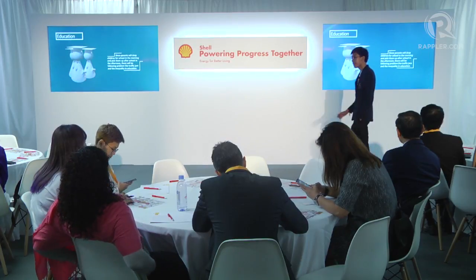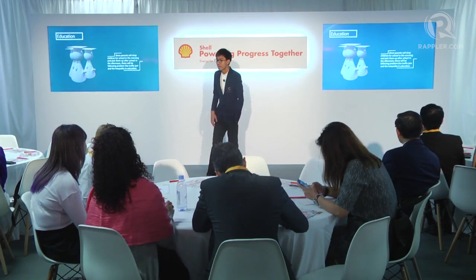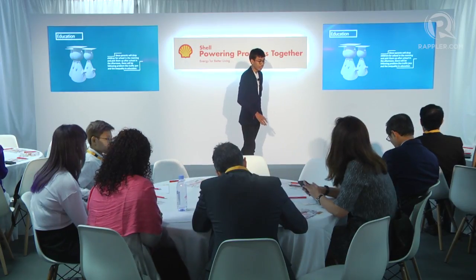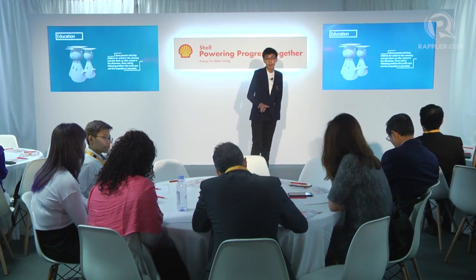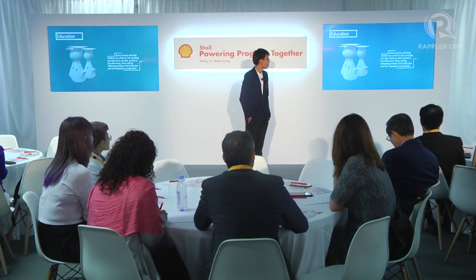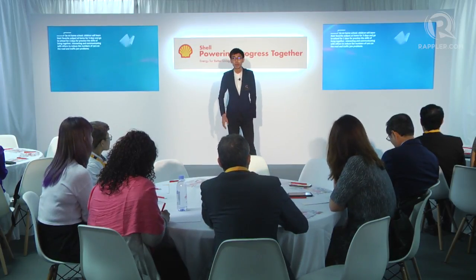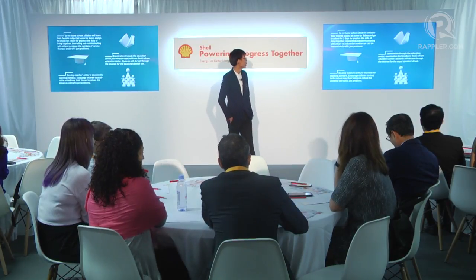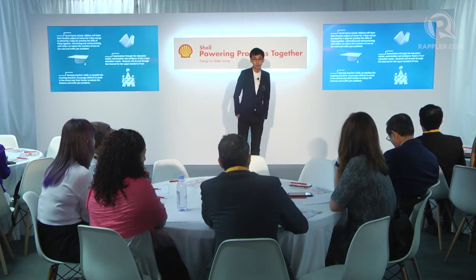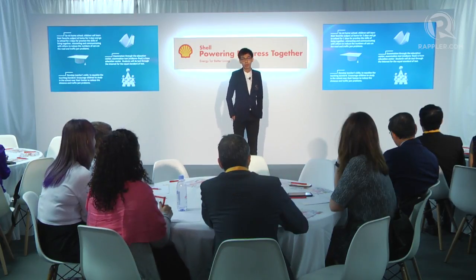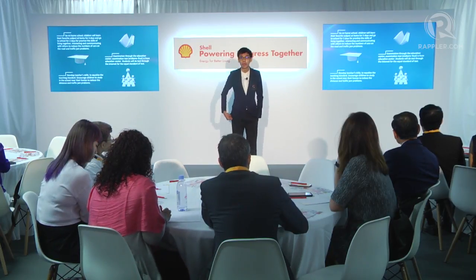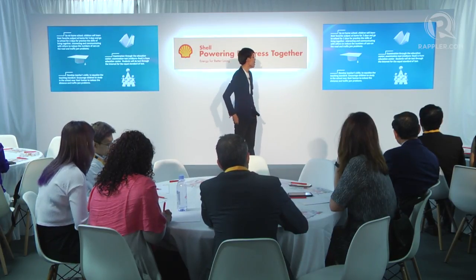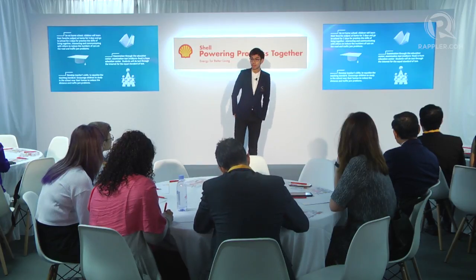Education in Thailand has many problems, including inequality and traffic congestion. To solve this, we propose something like a semi-home-school system: children can study core subjects at home, and then go to school to practice skills like communication and living skills, which also helps reduce traffic jams.